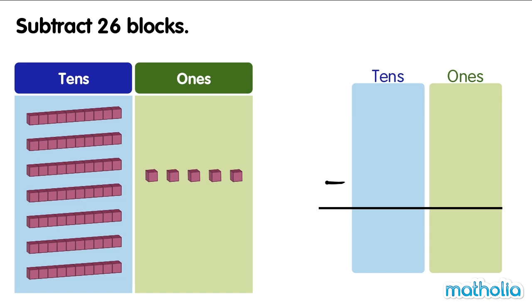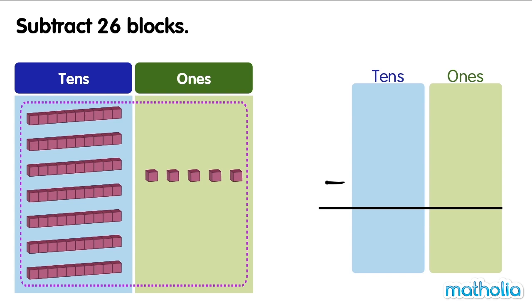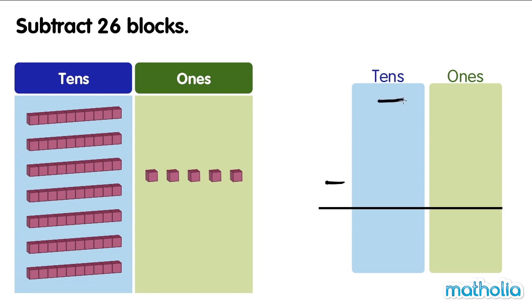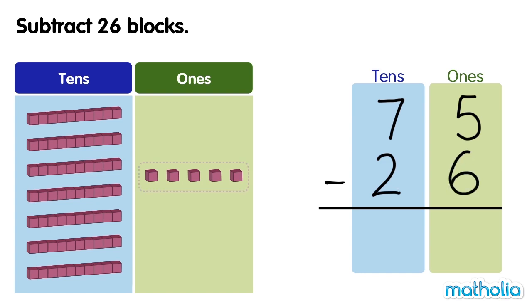We have 75 blocks. We subtract 26 blocks. Let's start by subtracting the ones. We cannot subtract 6 ones from 5 ones.